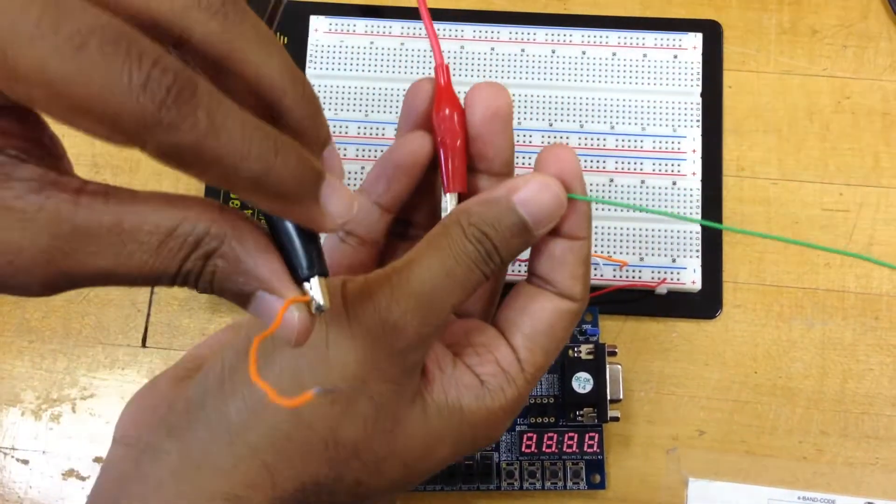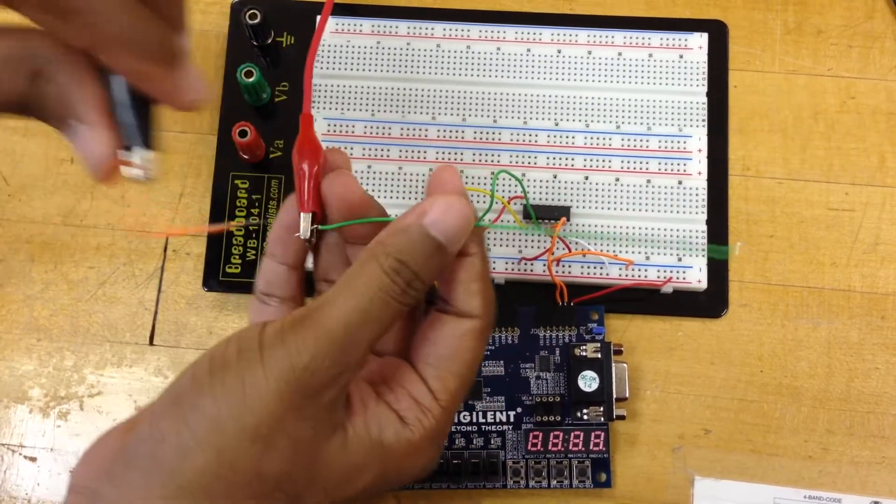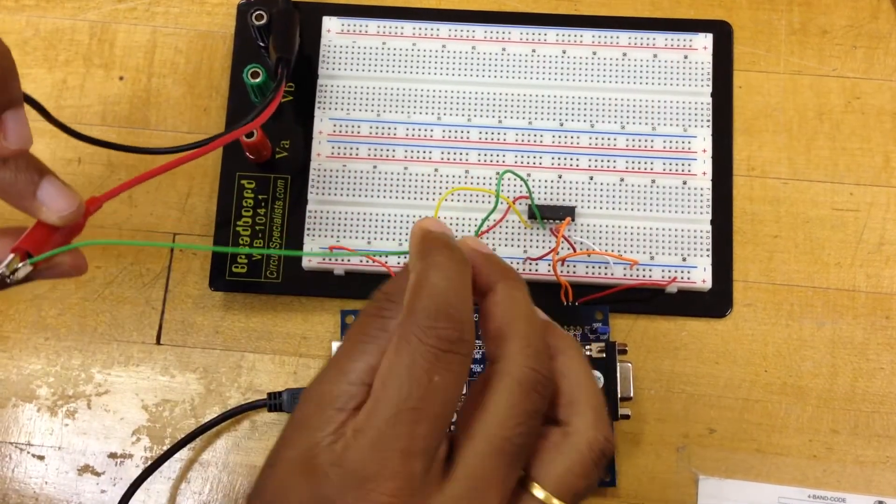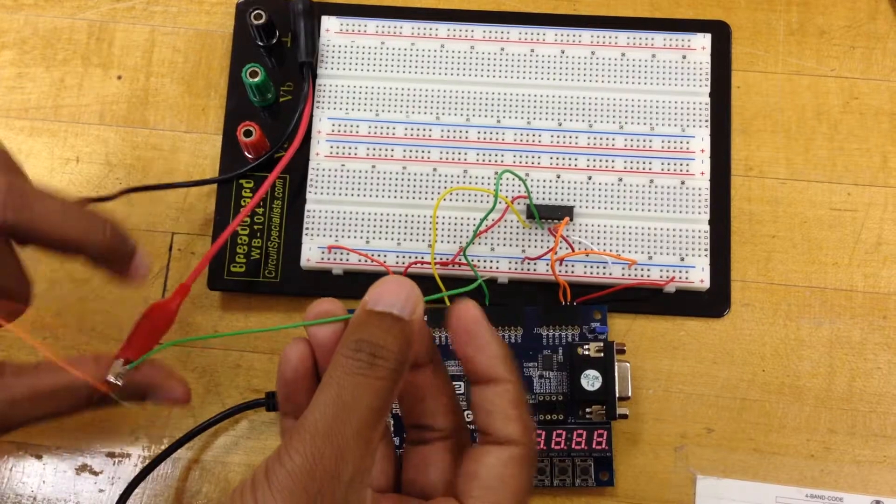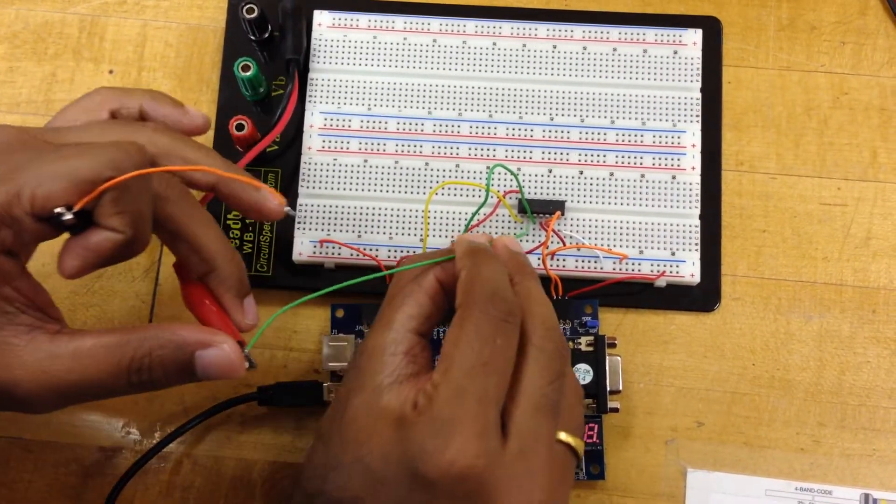I'm going to take one of these probes. I'm connecting two wires to the end of the probe. This red wire I'm going to connect to the clock. As we know, clock is the third pin of the chip 4013, so I'm going to connect this to the third pin and this black probe I'm going to connect to the ground.